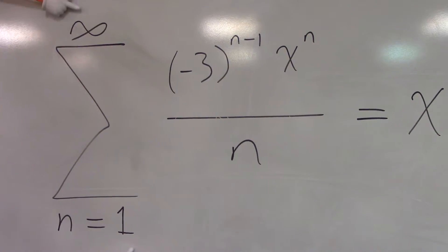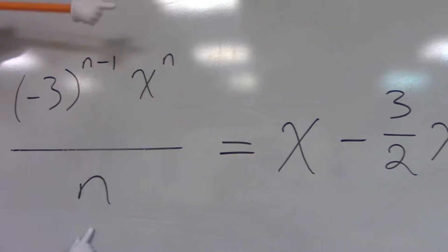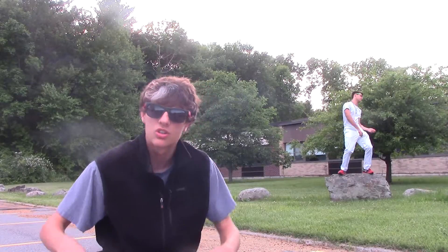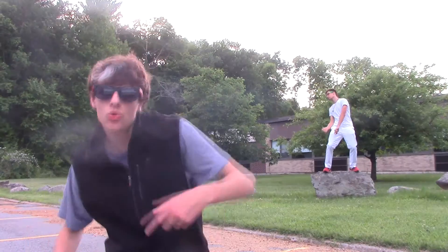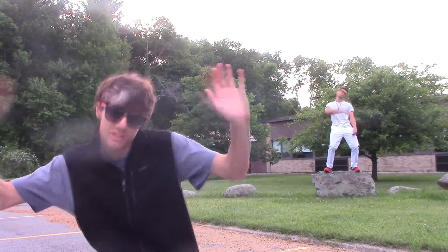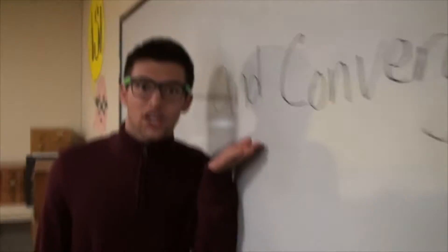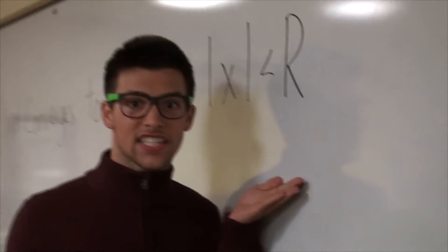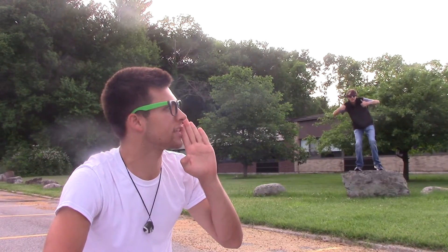The Maclaurin series for function f is given by the sum from 1 to infinity of the quantity negative 3 to the power of n minus 1, over n, times x to the n — equal to x minus 3 halves x squared, plus 3 times x to the third, minus dot dot dot, plus the quantity negative 3 to the power of n minus 1 over n times x to the n — and converges to f of x when the absolute value of x is less than r, where r is the radius of convergence for the Maclaurin series.